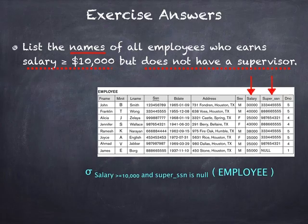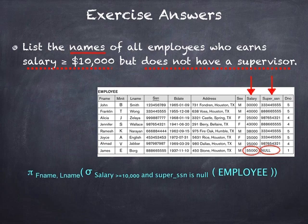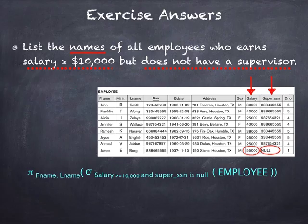Finally, the question asks for the names of those employees. Names are stored in the FName and LName attributes, so I project those two attributes from the EMPLOYEE table. The only employee satisfying both conditions in this sample data was James Borg — that's the expected result from the selection.